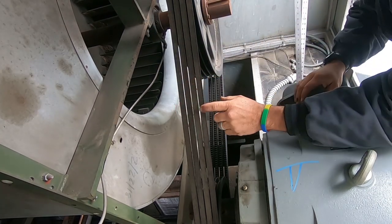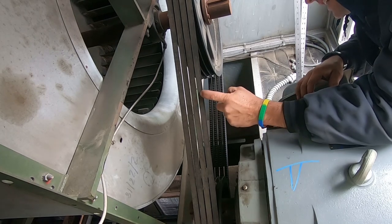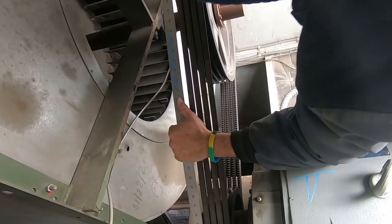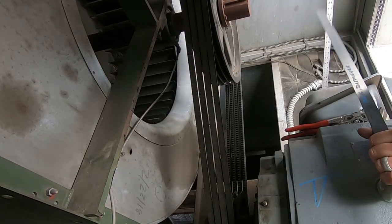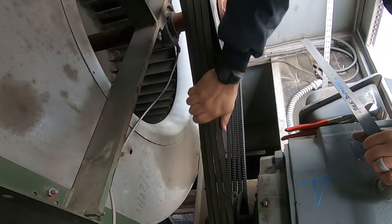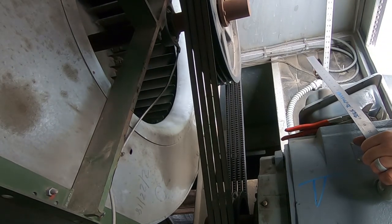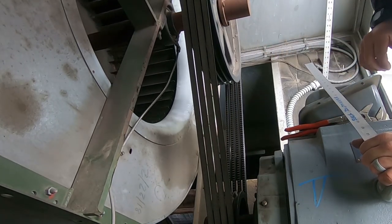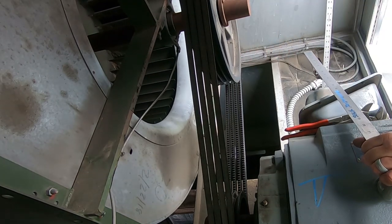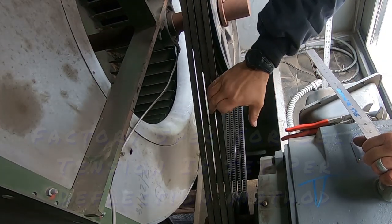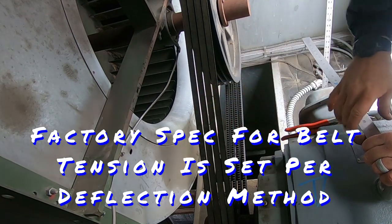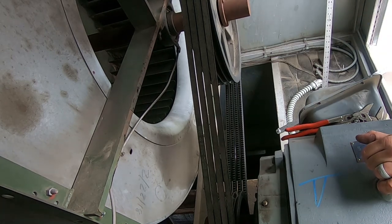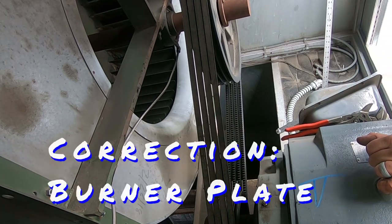Make sure you do your lockout tagout too. This thing will take your arm off and throw you off the side like it ain't nothing. Alright, it's pretty uniform. Also need to check our static pressure across the blower housing.